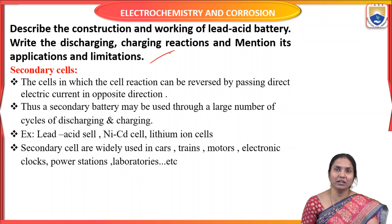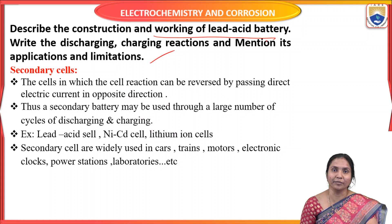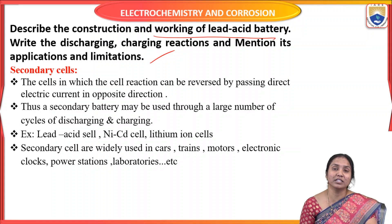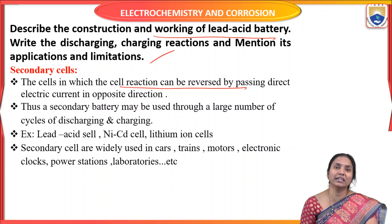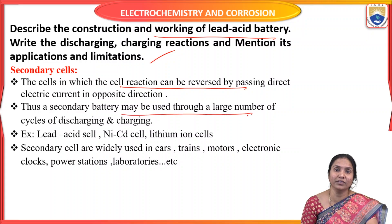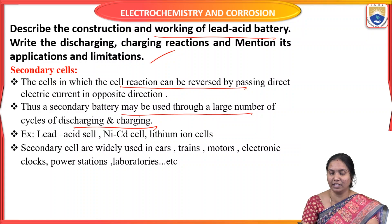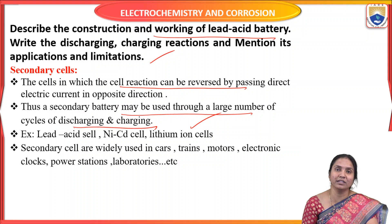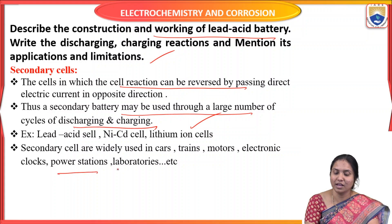The next question is: describe the construction and working of a lead acid battery, and write the discharging and charging reactions. The lead acid storage battery is the best example of a secondary battery, where cell reactions are reversible. This battery uses a number of cycles through charging and discharging, and the cell reaction can be reversed by passing direct electric current in the opposite direction. Examples of secondary batteries include lead acid, nickel cadmium, and lithium ion batteries, used in cars, trains, motors, electronic clocks, power stations, and laboratories.